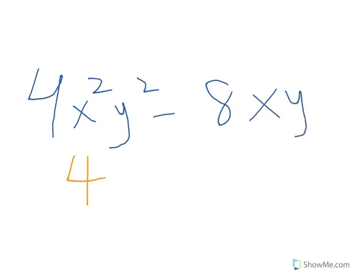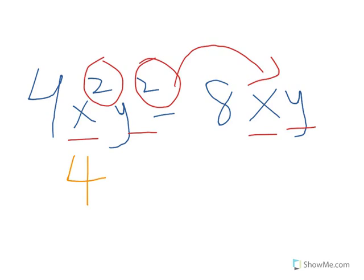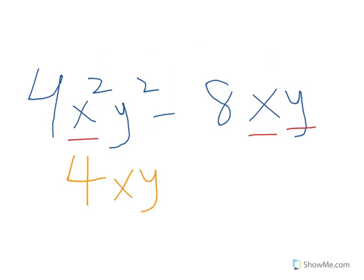Which is 4. 4 can be divided by both numbers. And then I notice we have an X and Y, X and Y which is common. I can't take X squared or Y squared because that's not in the other number. I have to take the common terms. So 4XY. 4 divided by 4 is 1.